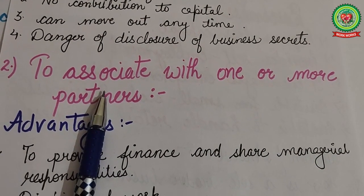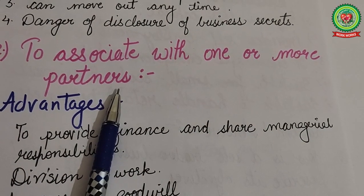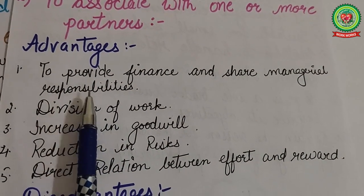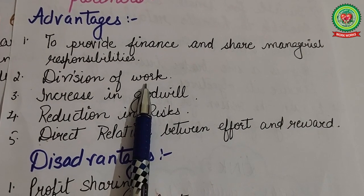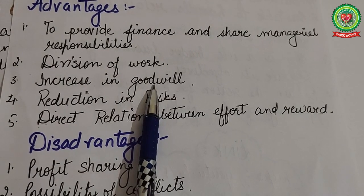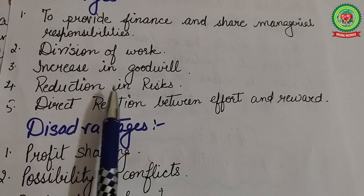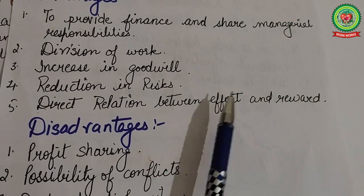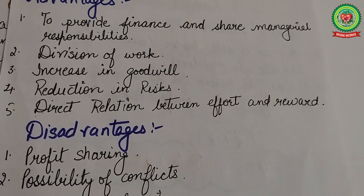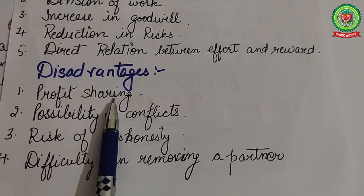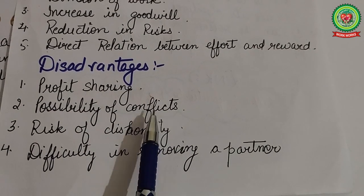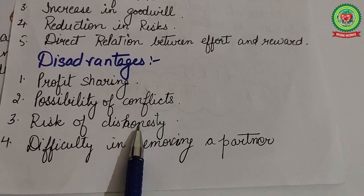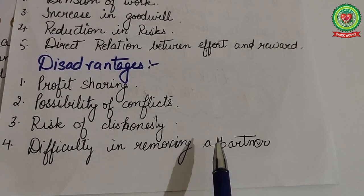The second expansion option is to associate with one or more partners. Advantages include sharing of finance and managerial responsibilities, division of work, increase in goodwill brought by other partners, reduction in risks, and a direct relationship between effort and reward — the more hard work they do, the more profits they earn. Disadvantages include profit sharing among partners, the possibility of conflicts between partners due to differing opinions, risk of dishonesty, and difficulty in removing a partner from the business.